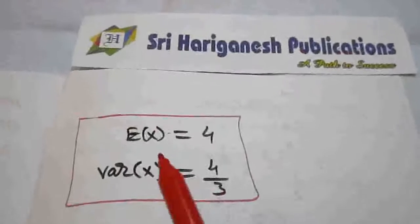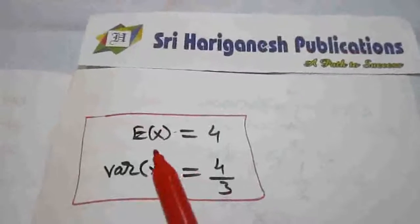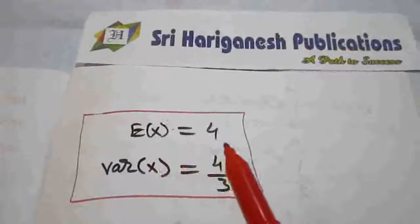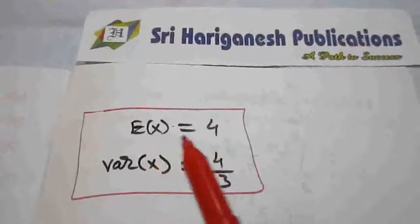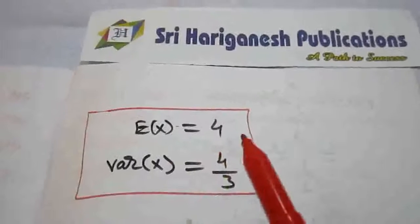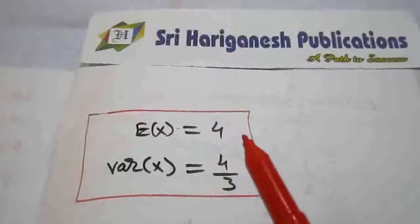So E(x) = 4, that is the expectation of x is 4, which is called the mean. And the variance of x is 4/3.